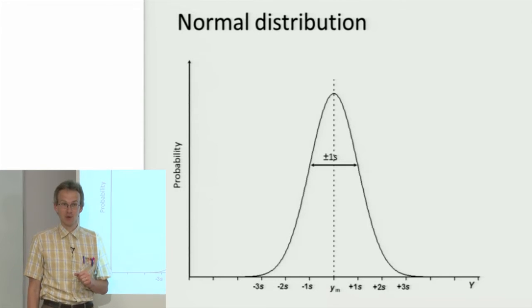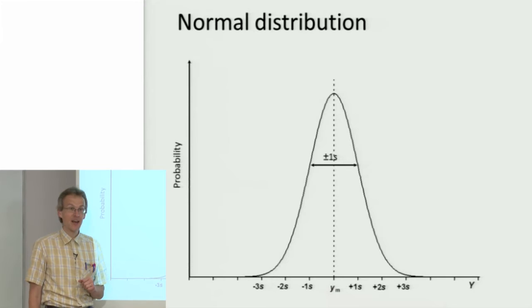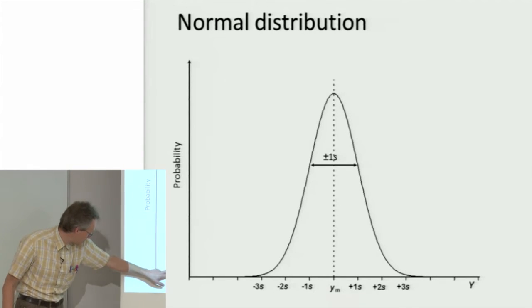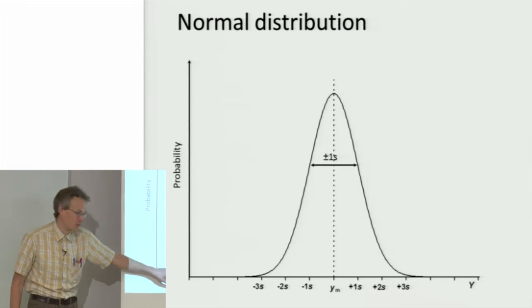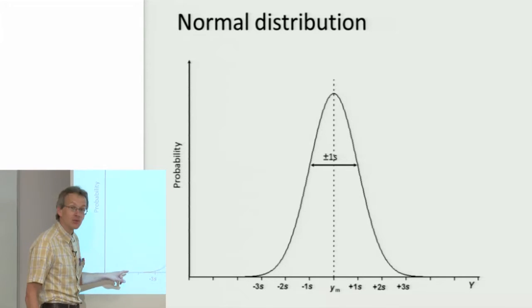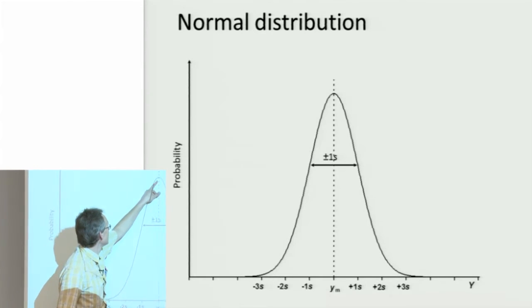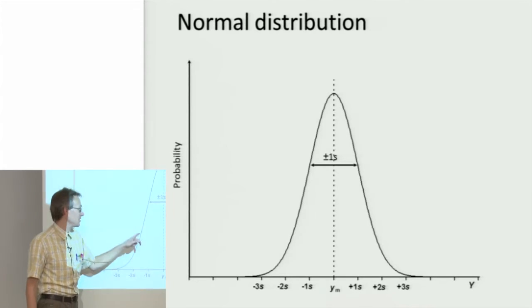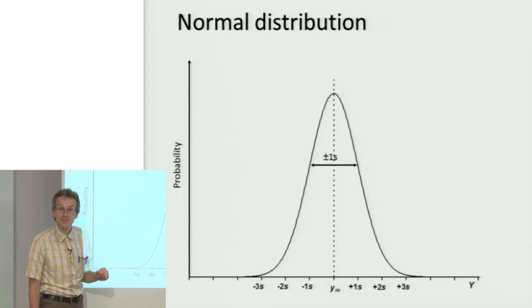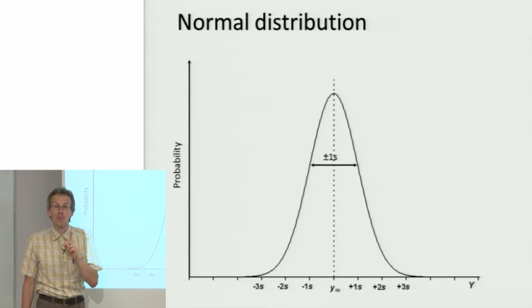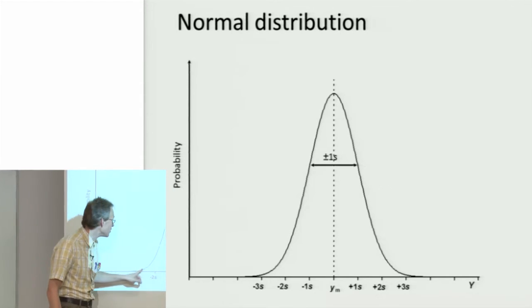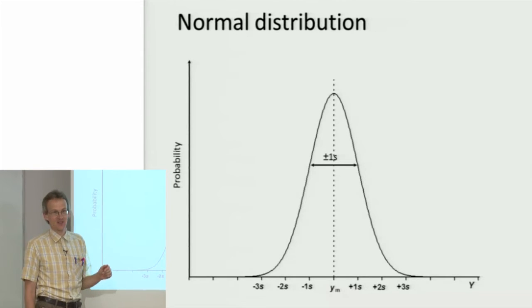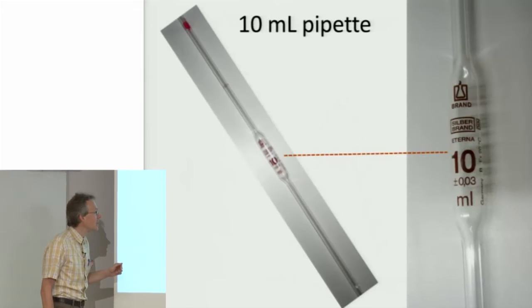The second important feature of this normal distribution curve is that even though it never really ends, so there always will be positive value however far we move from the mean value, nevertheless the area under this curve is finite. In the case of normalized function it's equal to unity, meaning the probability of this value being somewhere is 100%, which obviously needs to be true.